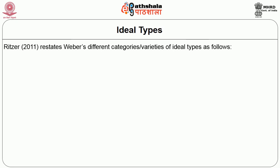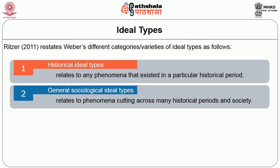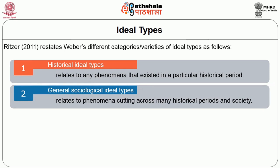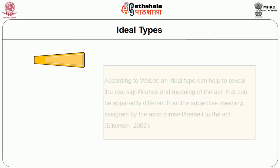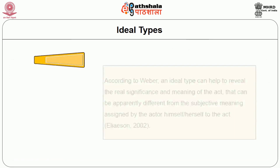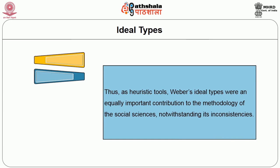Weber's different categories or varieties of ideal types are as follows. One: historical ideal types, which relate to any phenomena that existed in a particular historical period. Two: general sociological ideal types, relating to phenomena cutting across many historical periods and societies. Three: action ideal types — pure types of action based on actors' motivations. Four: structural ideal types — forms taken by the causes and consequences of social action. According to Weber, an ideal type can help reveal the real significance and meaning of an act that can apparently be different from the subjective meaning assigned by the actor to the act. Thus, as heuristic tools, Weber's ideal types were an equally important contribution to the methodology of social sciences, notwithstanding their inconsistencies.